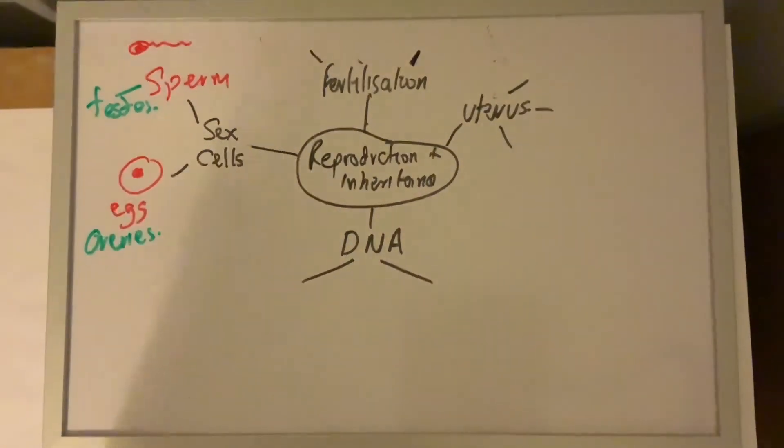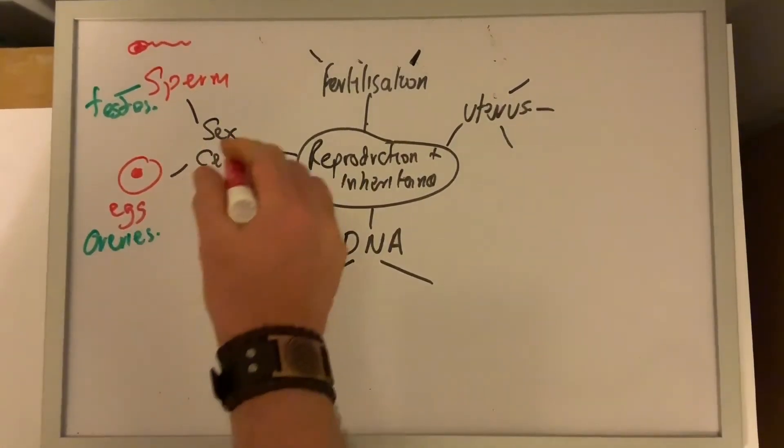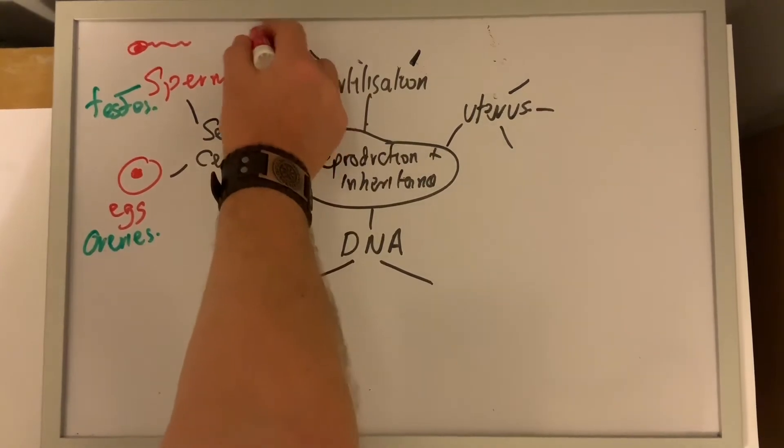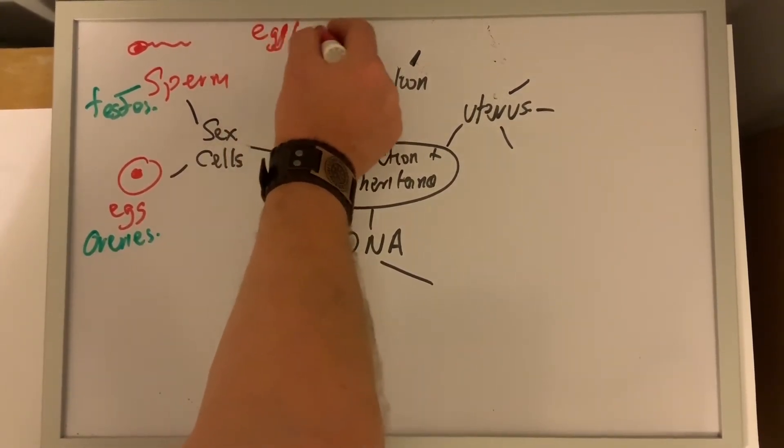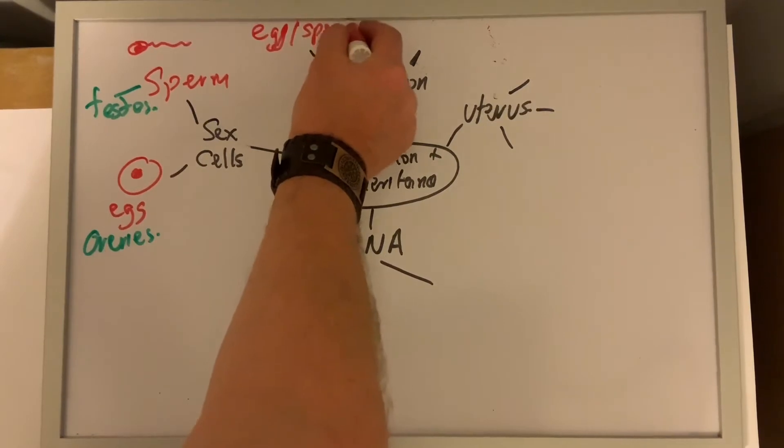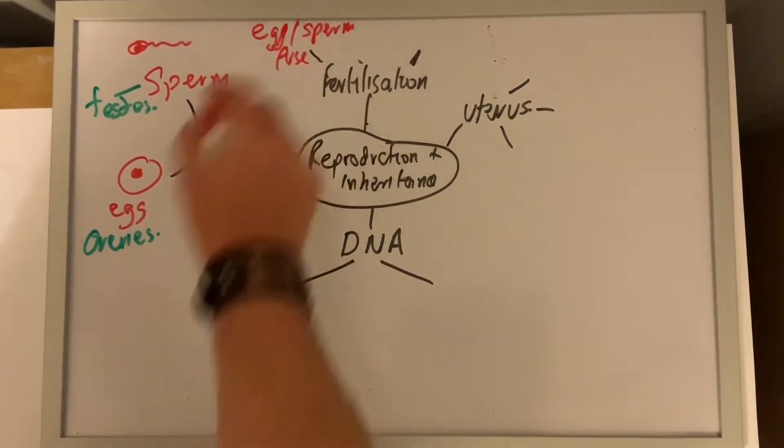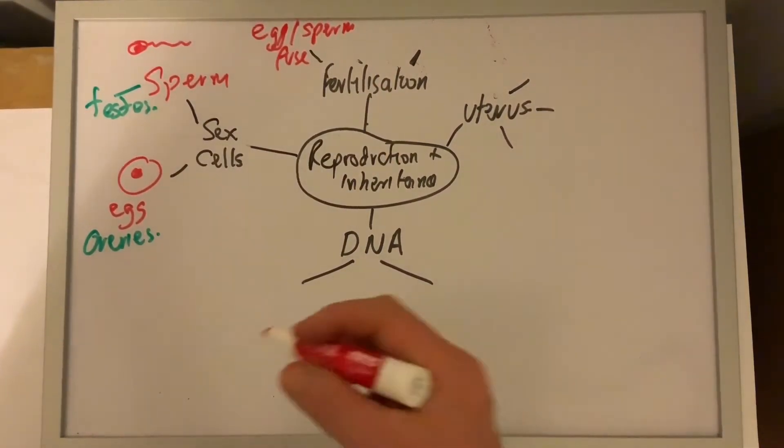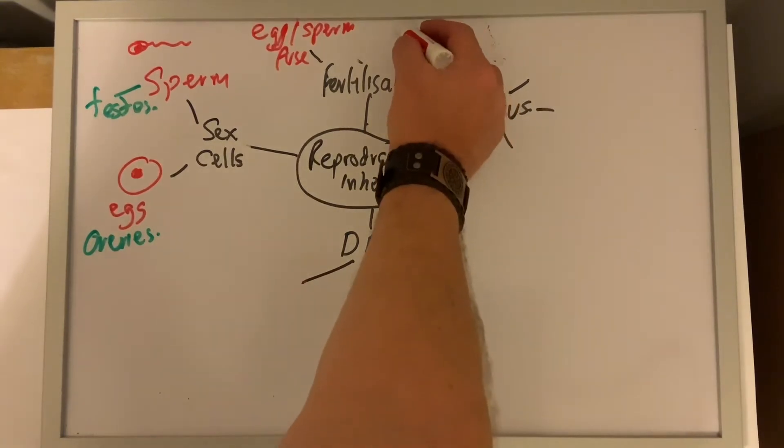Fertilization occurs when the egg and the sperm nucleus fuse together. This actually happens in the oviduct, not in the uterus, as people would think.